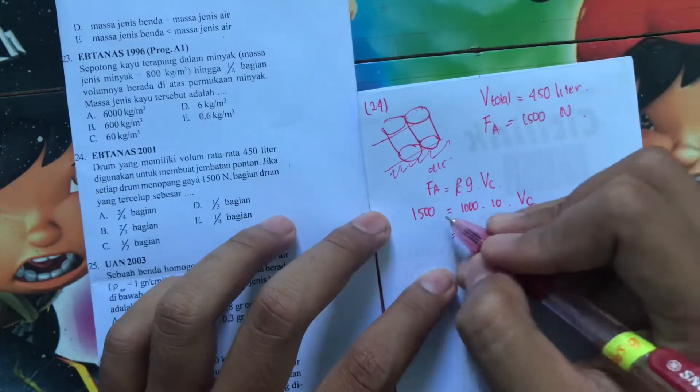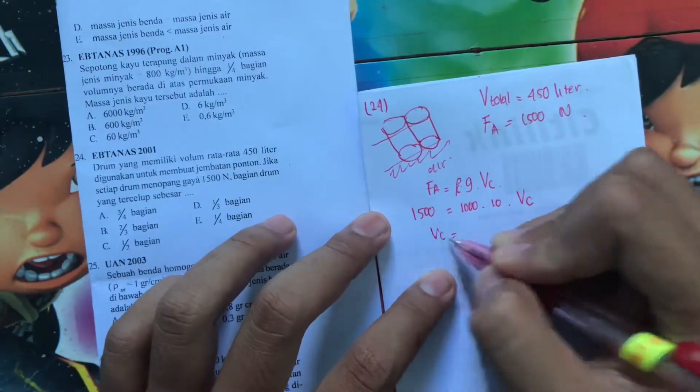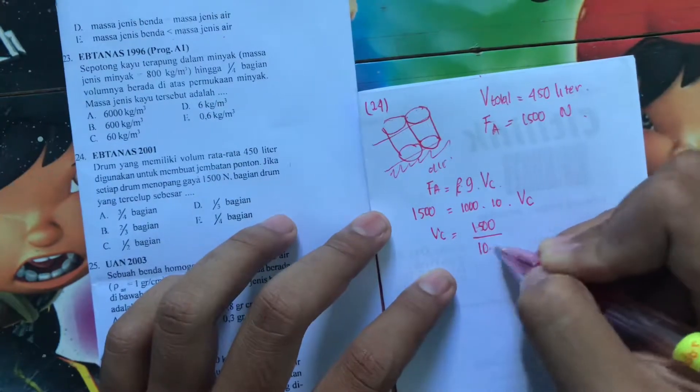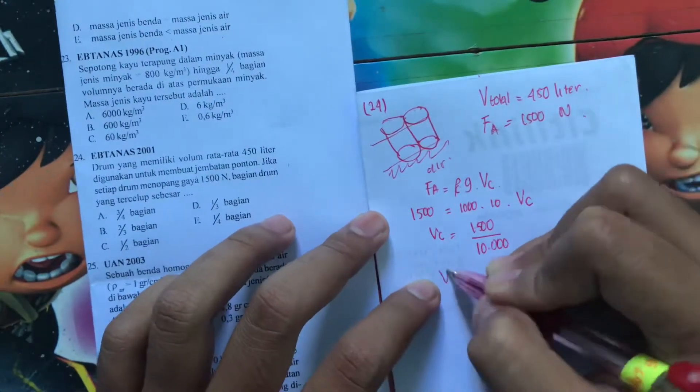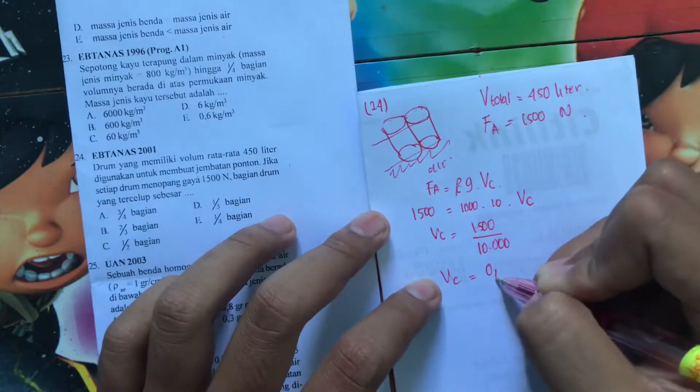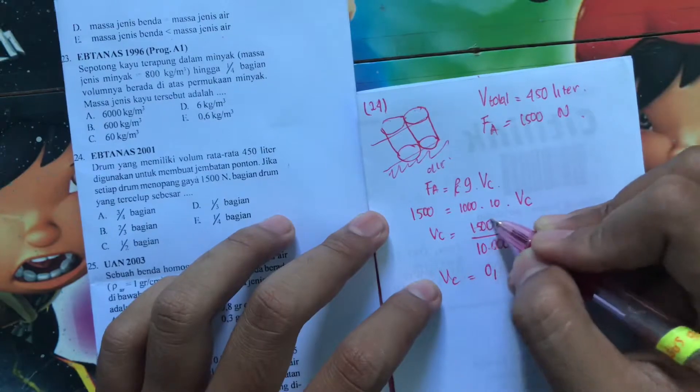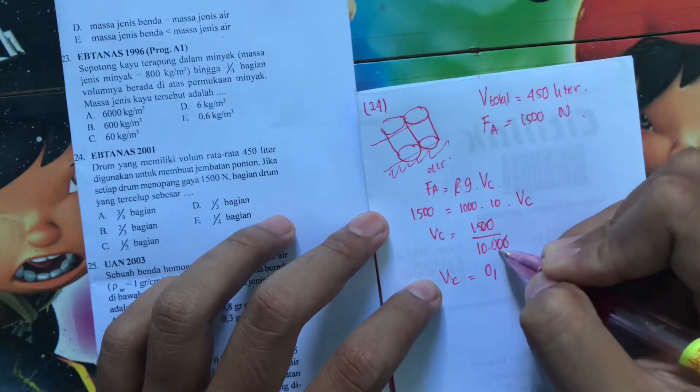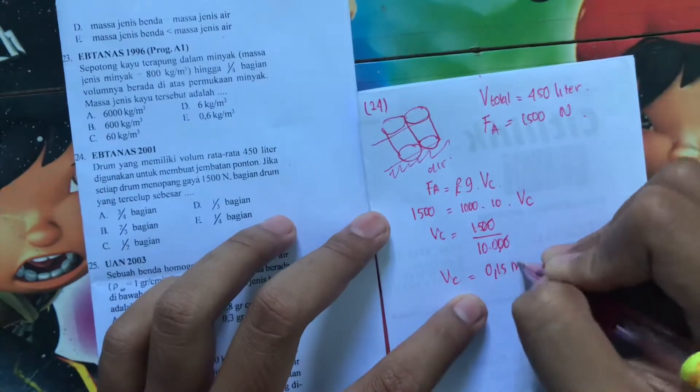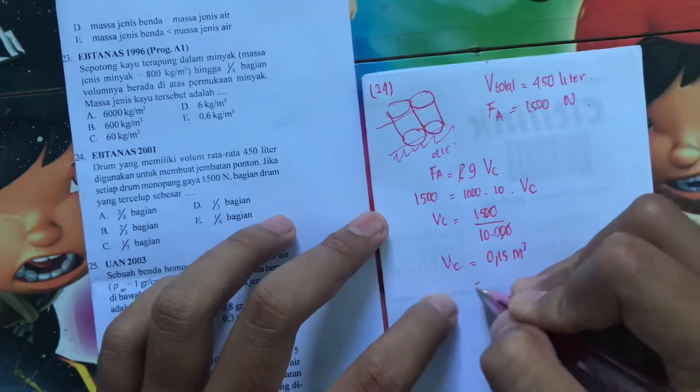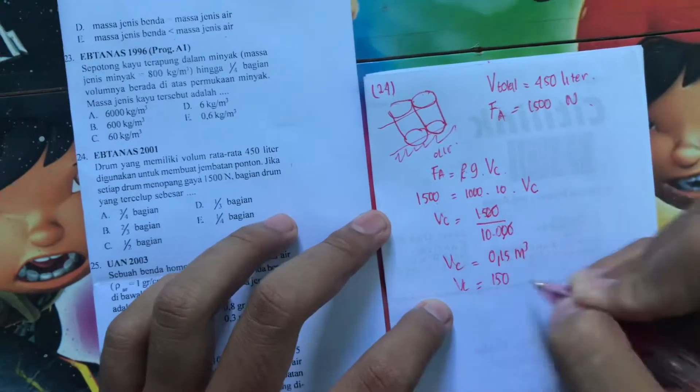Berarti disini ketemunya adalah volume tercelup itu adalah seribu lima ratus dibagi dengan sepuluh ribu. Berarti volume tercelupnya adalah 0,15 meter kubik. Karena kita satunya SI semua ini. Berarti kalau jadiin liter jadi seribu. 150 liter.